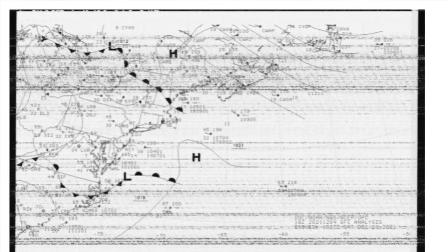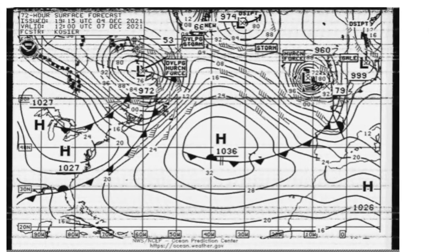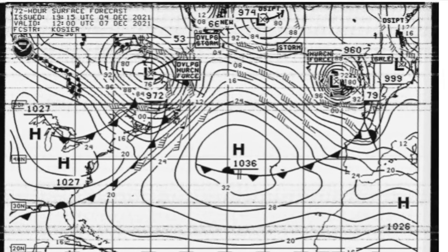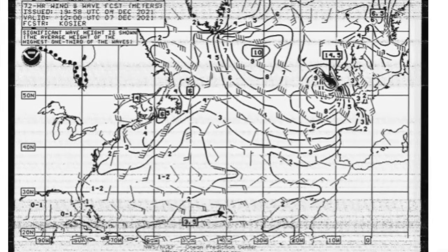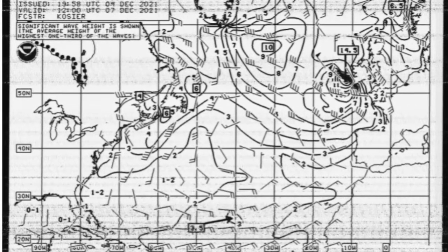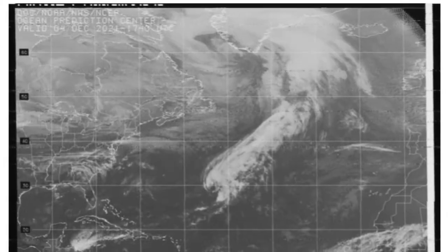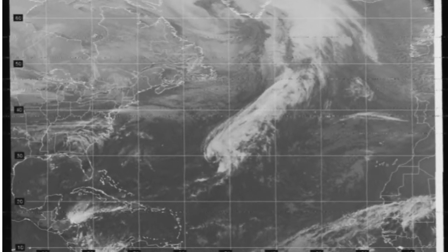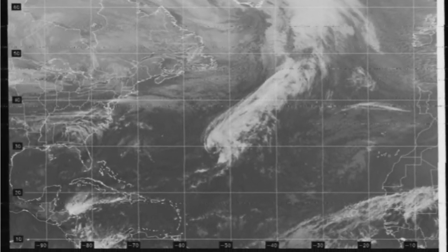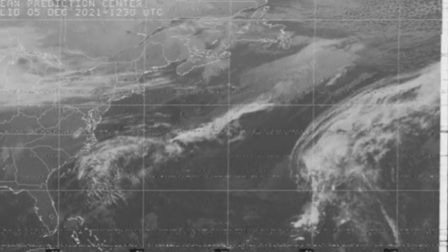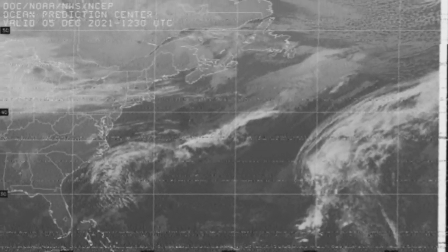Receiving these charts by RadioFax requires only a shortwave receiver and the gear to decode it — no service to pay for or subscribe to. Transmissions are directed to give coverage to ships at sea, but even as far inland as Ohio, I can regularly receive these transmissions from NMF Boston and NMG New Orleans.